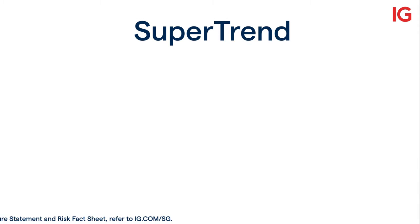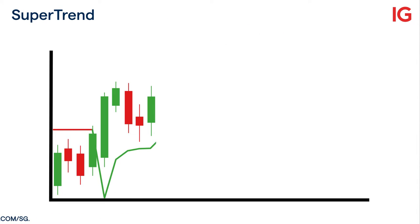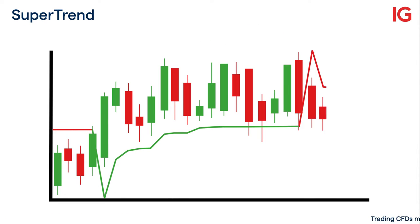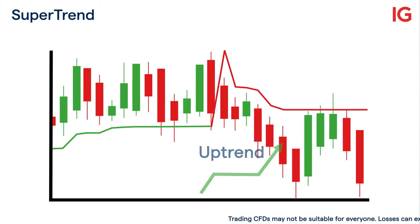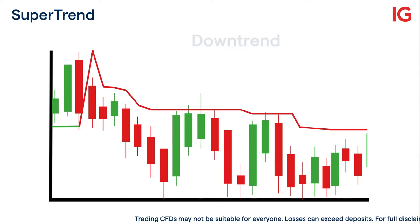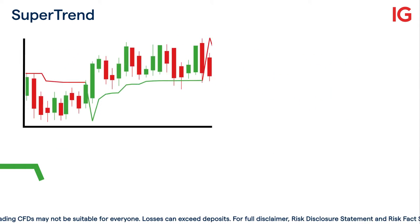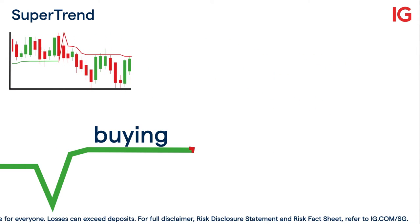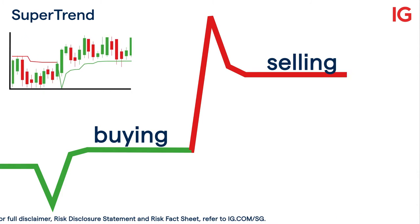The supertrend indicator appears as a line on a chart and changes color based on the direction of the trend. When the line is green, it indicates an uptrend, and when the line is red, it indicates a downtrend. When the supertrend line is green, traders may look for buying opportunities.